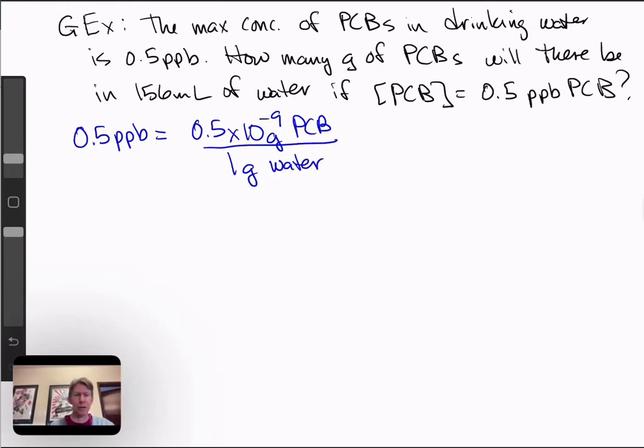Now we have 156 milliliters, which for water is 156 grams, because the density of water is 1.00 gram per milliliter, or very close to it. So that's 156 grams.